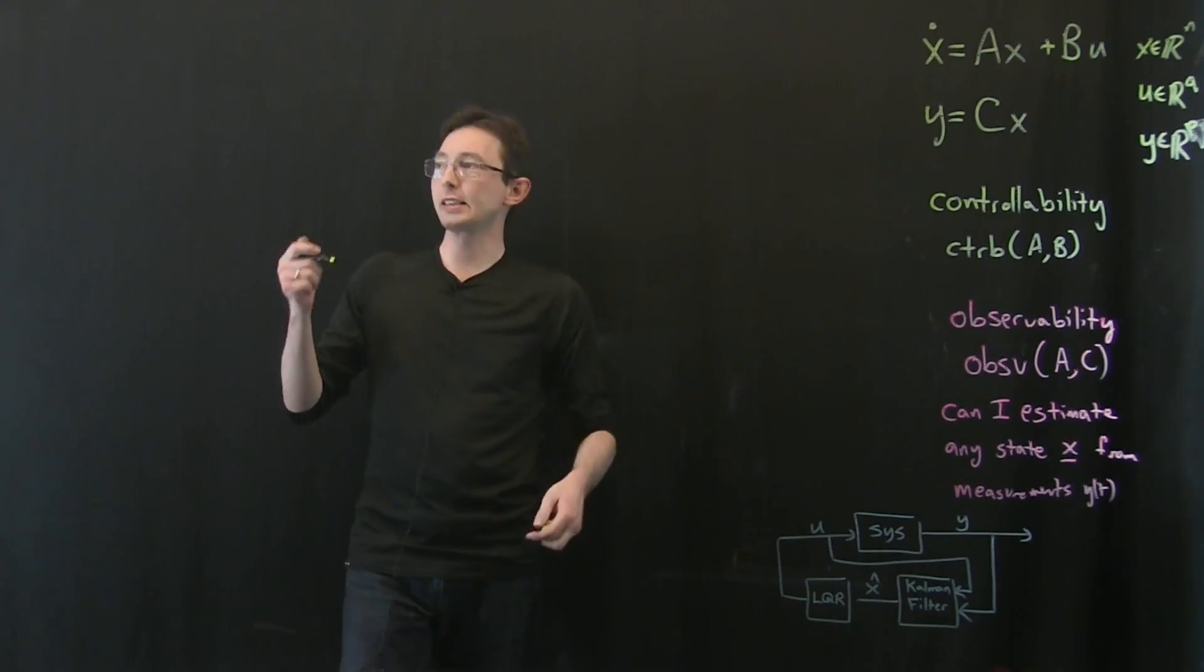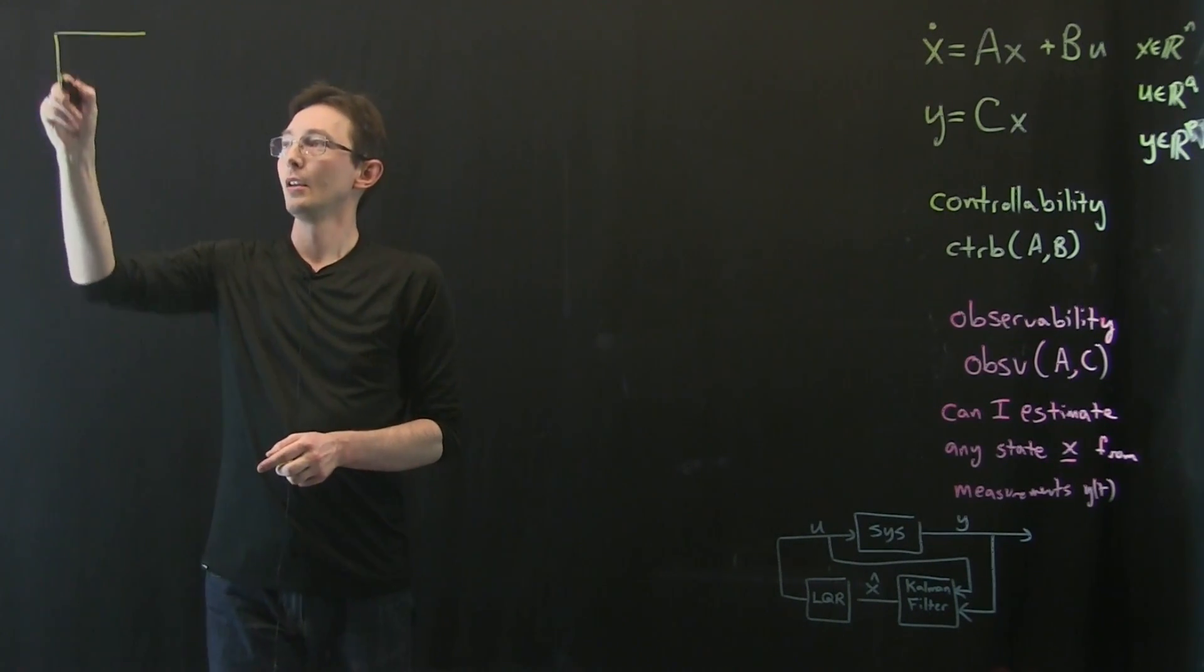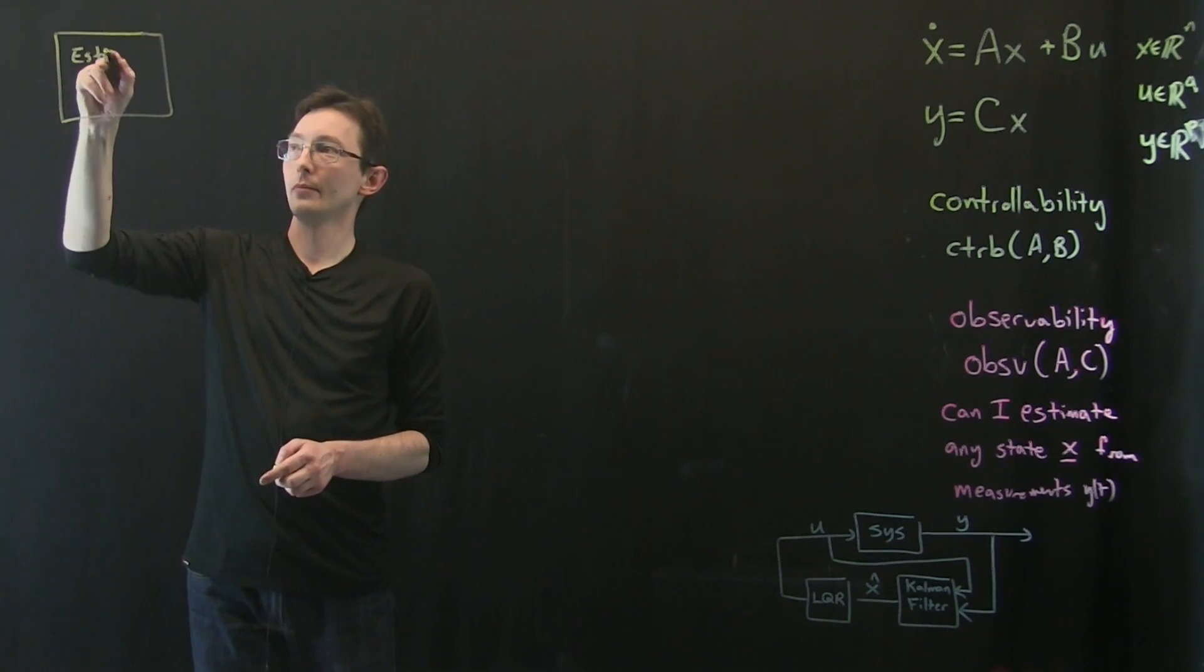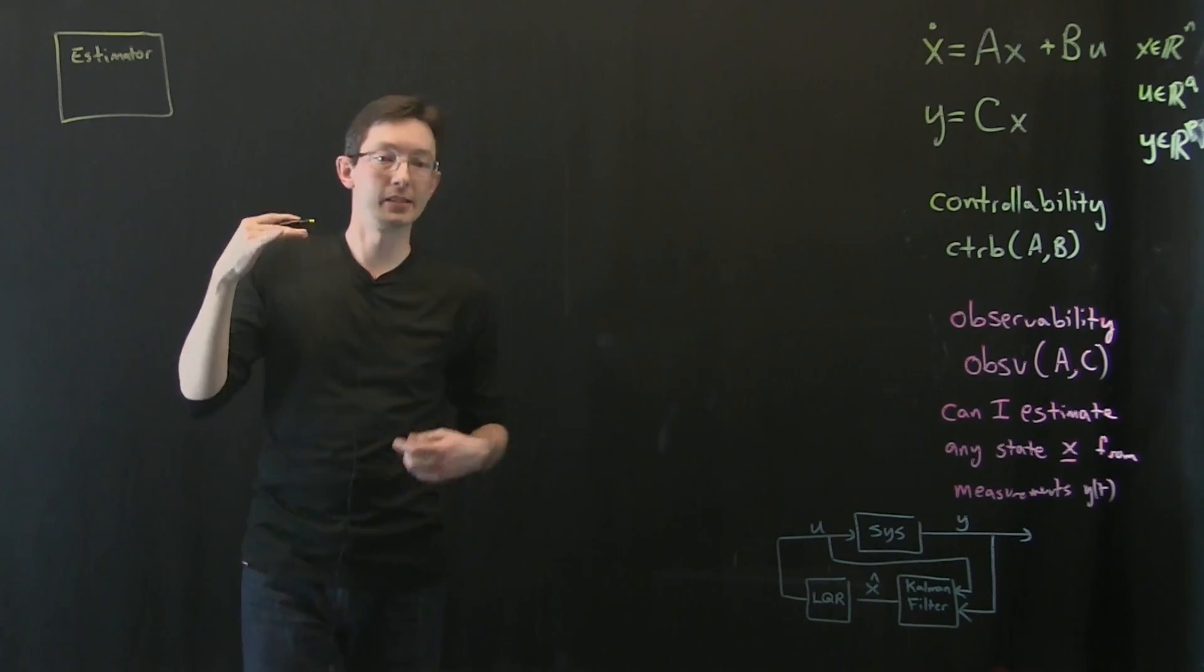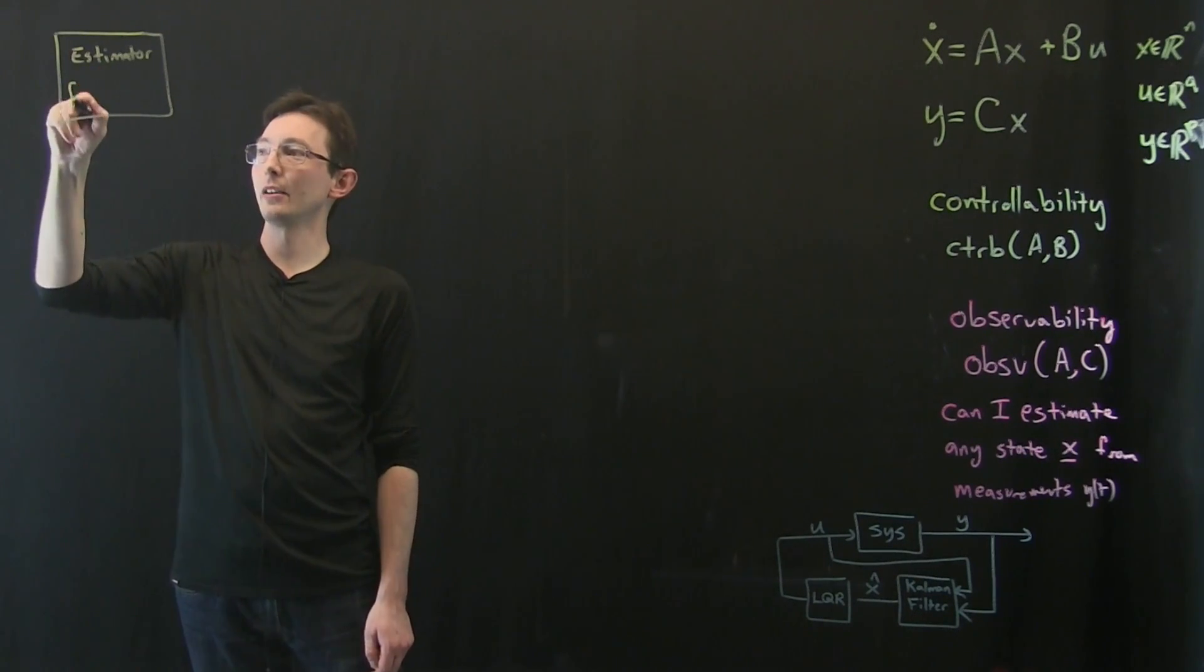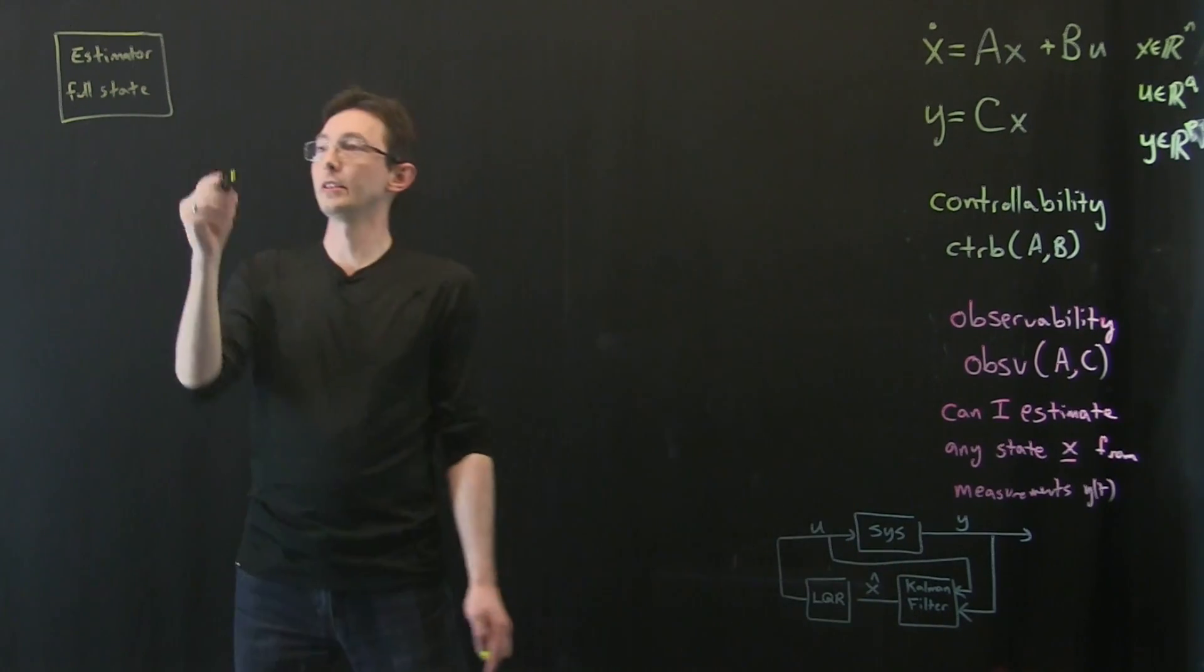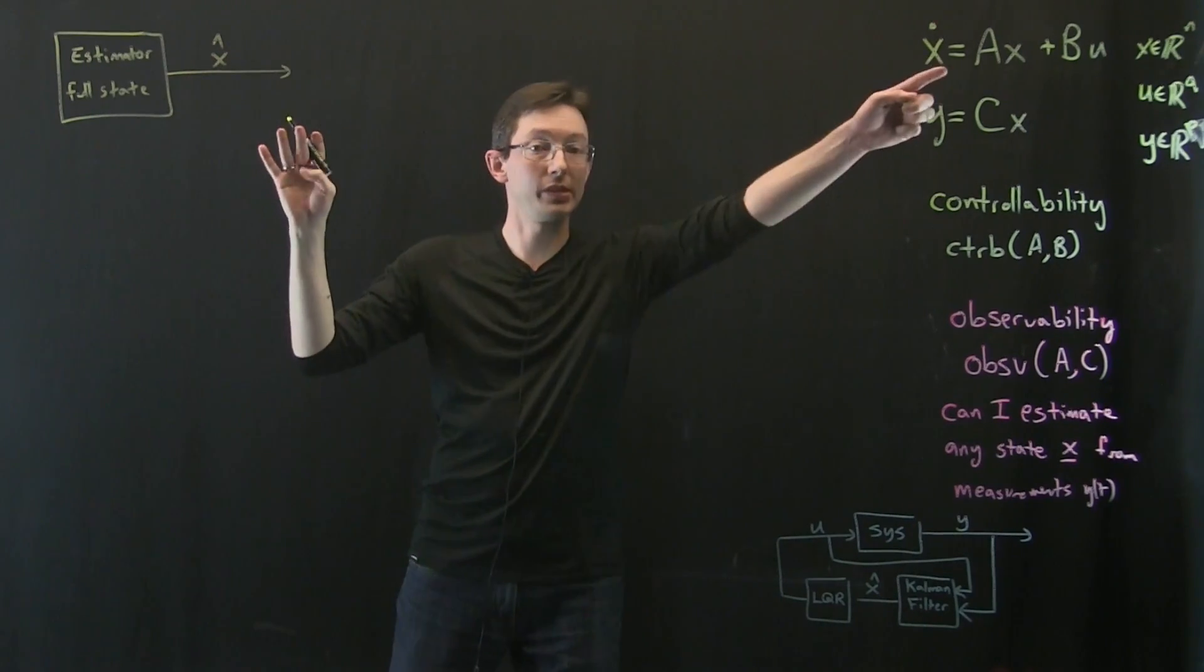I'm going to draw the schematic of this and then we're going to figure out what the system should look like. So the schematic of our estimator - I'm not even going to call it a Kalman filter until we optimize it because the Kalman filter is an optimal estimator. This is an estimator of the full state.